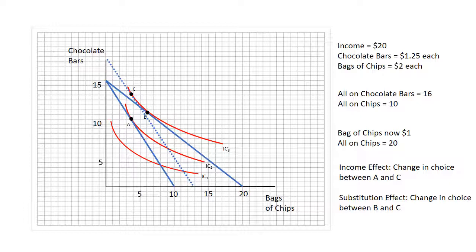It's just a way of breaking the change in consumption into a piece that relates to the fact that the consumer can now afford to buy more—the income effect—because prices have fallen, and a component that relates to the change in the relative price of chips and chocolate bars.